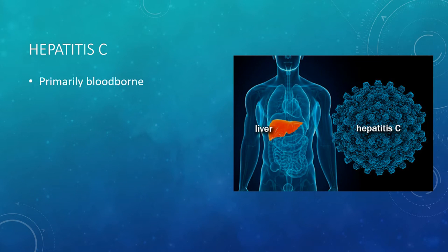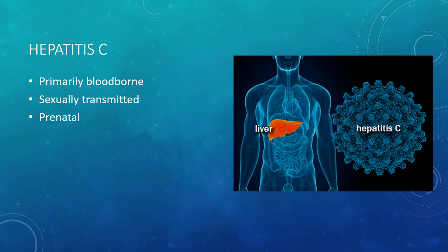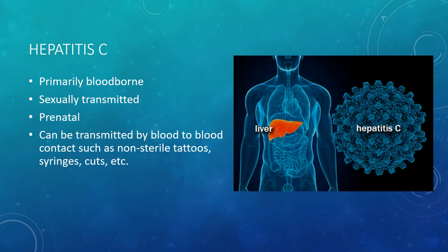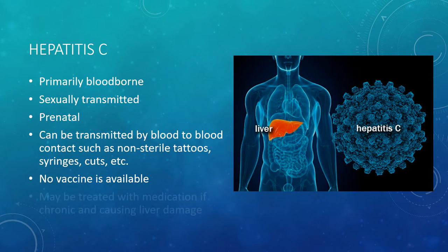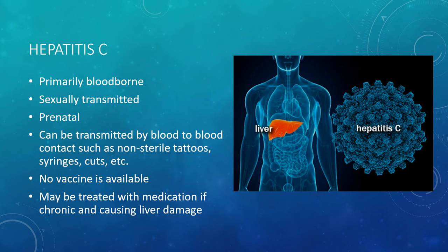Hepatitis C is primarily bloodborne, can be sexually transmitted or prenatal, and can be transmitted by blood-to-blood contact such as non-sterile tattoos, syringes, or cuts. There is no vaccine currently available, but it may be treated with medication if chronic and causing liver damage.